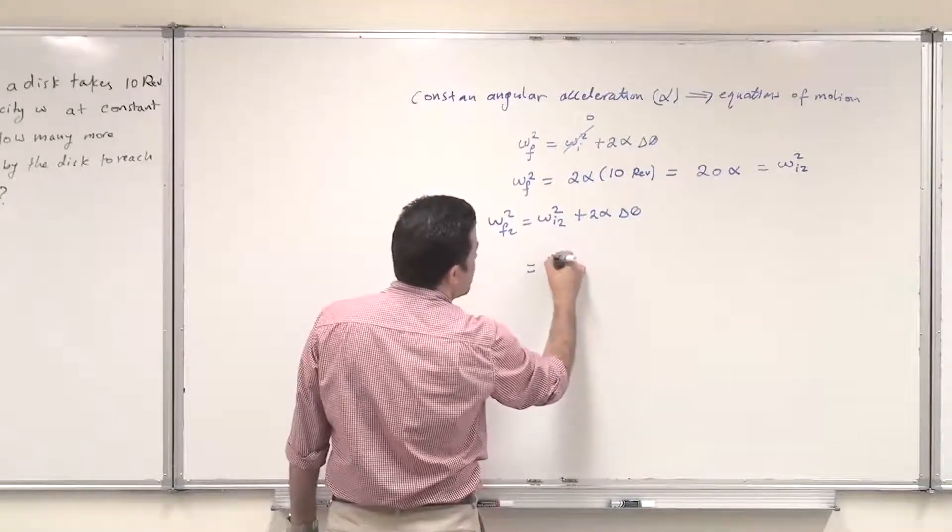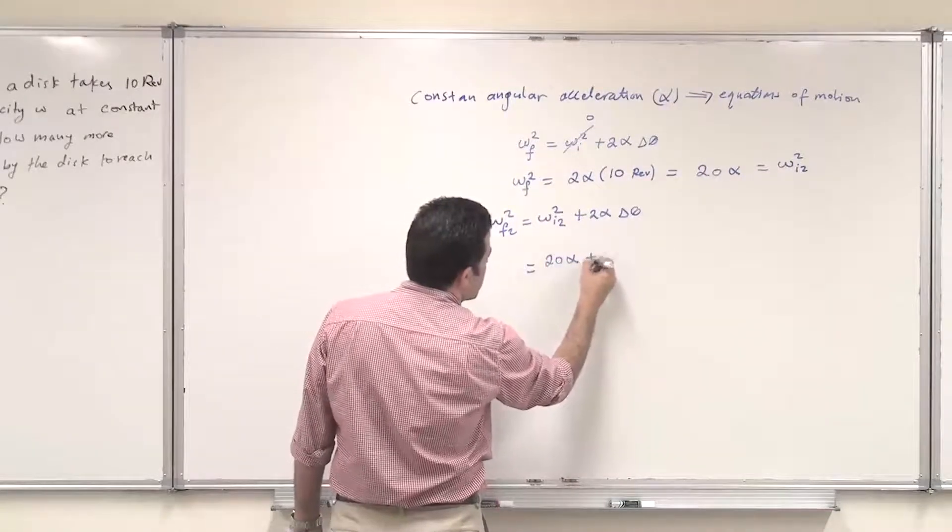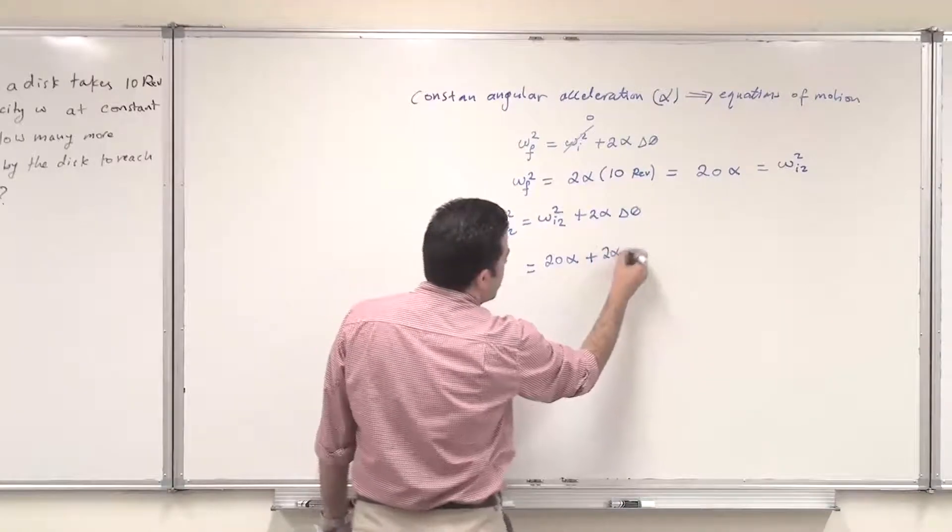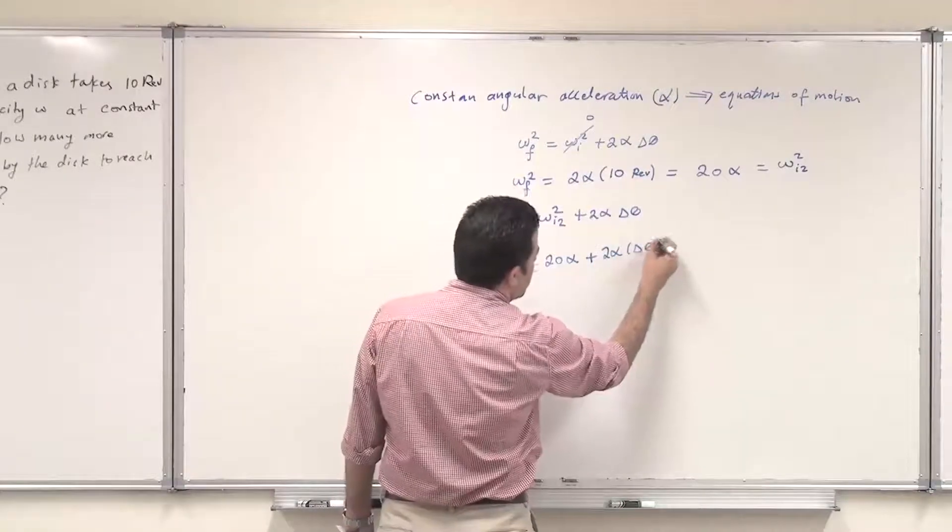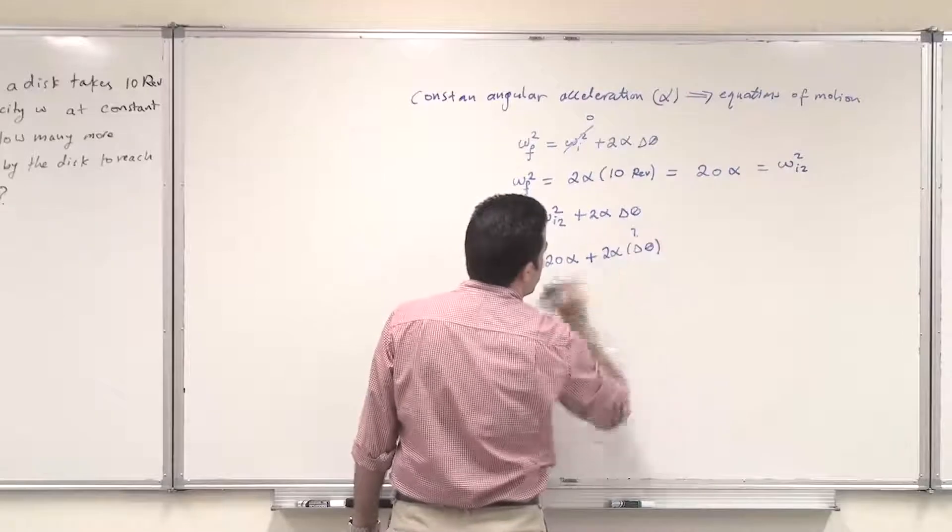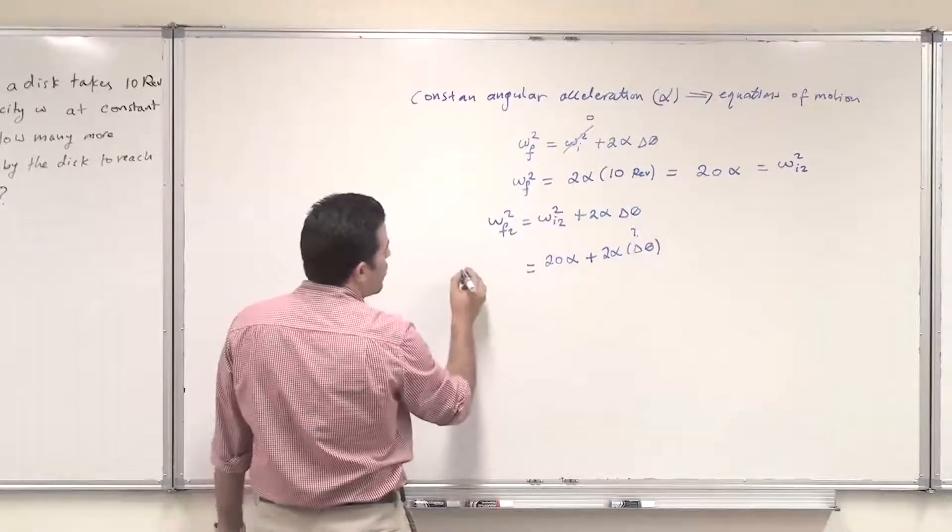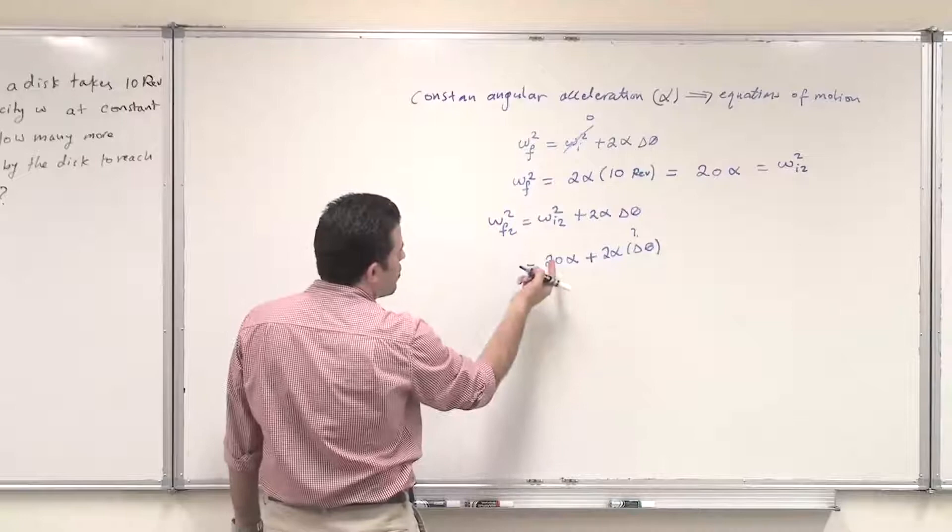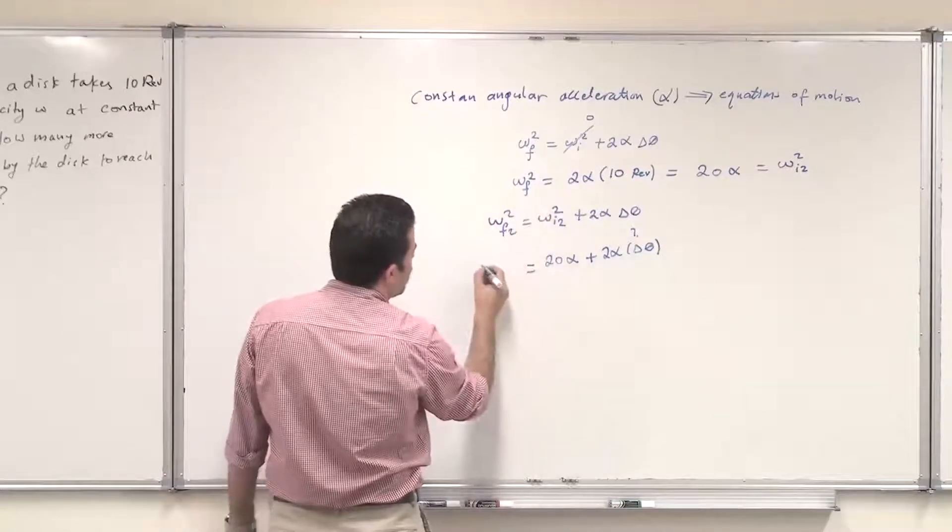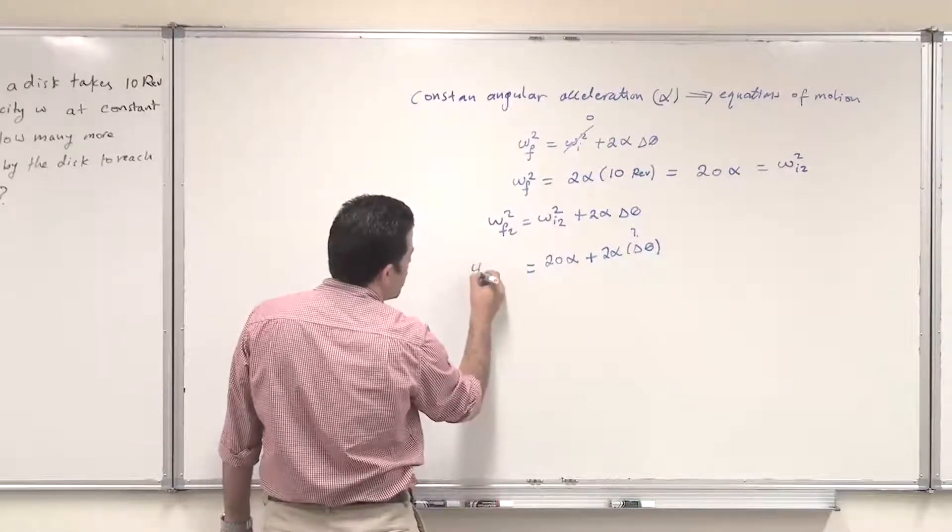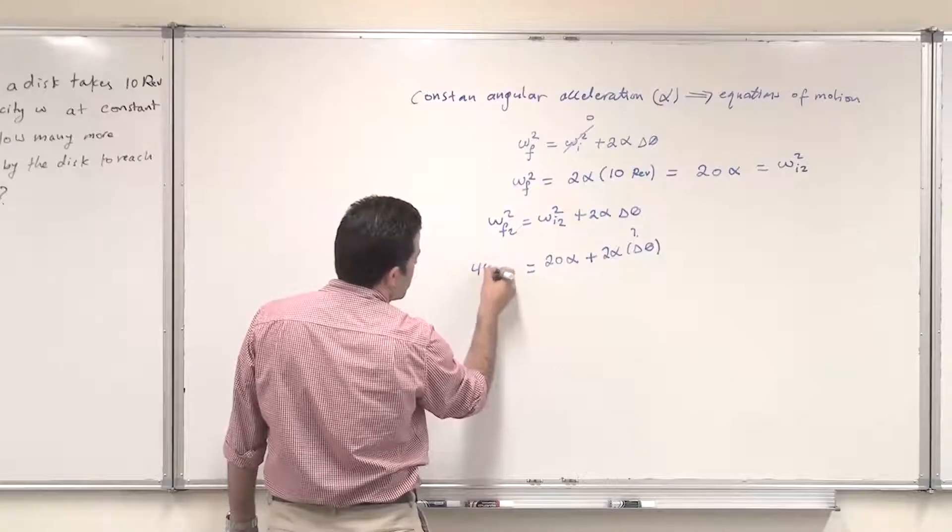So 20 alpha plus 2 alpha delta theta. This is the unknown that we need to find, how many revolutions. And here we have omega final 2 omega, so it should be 4 omega squared.